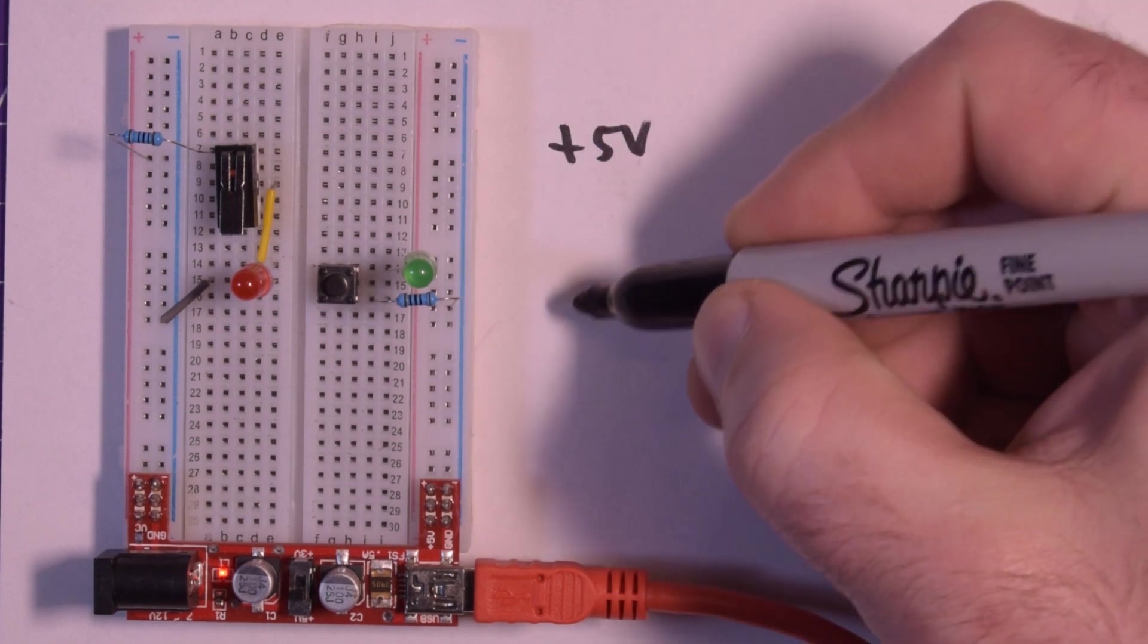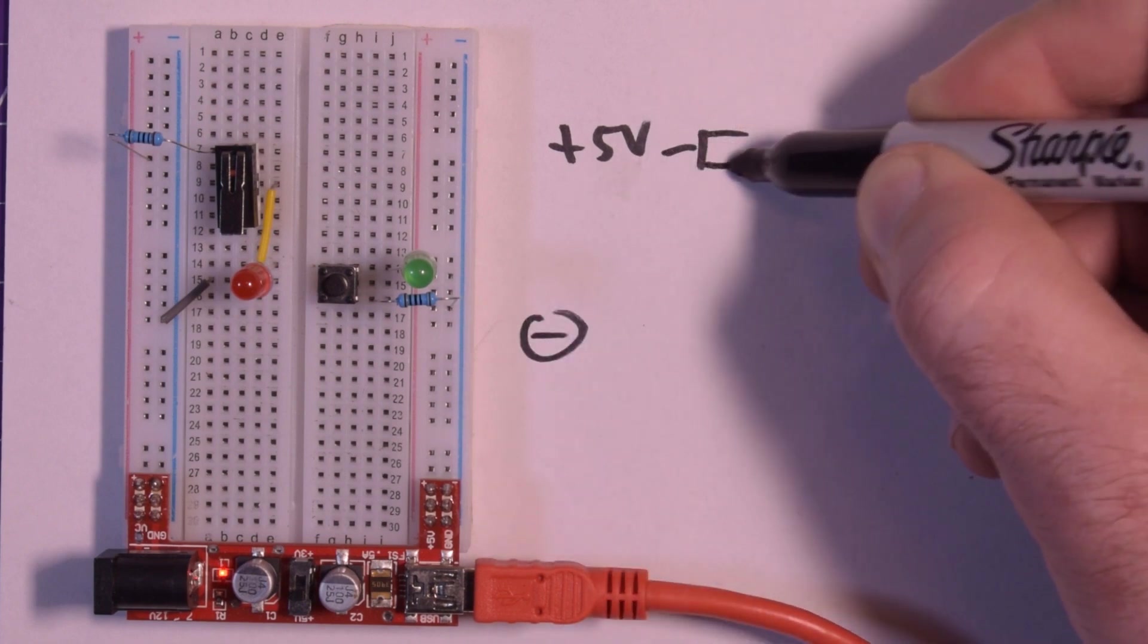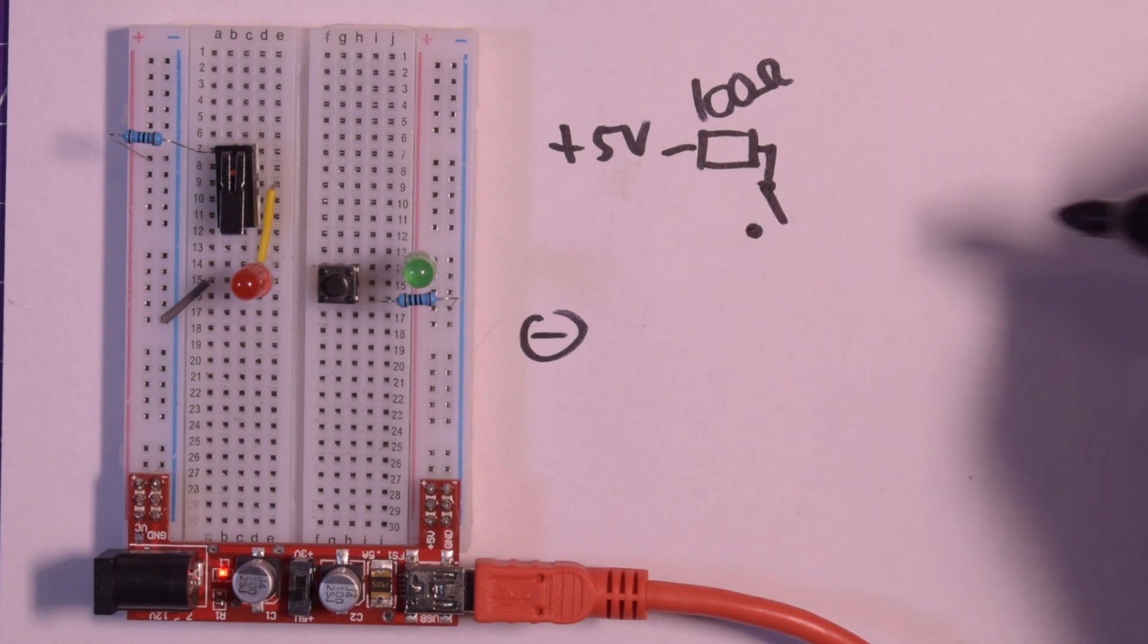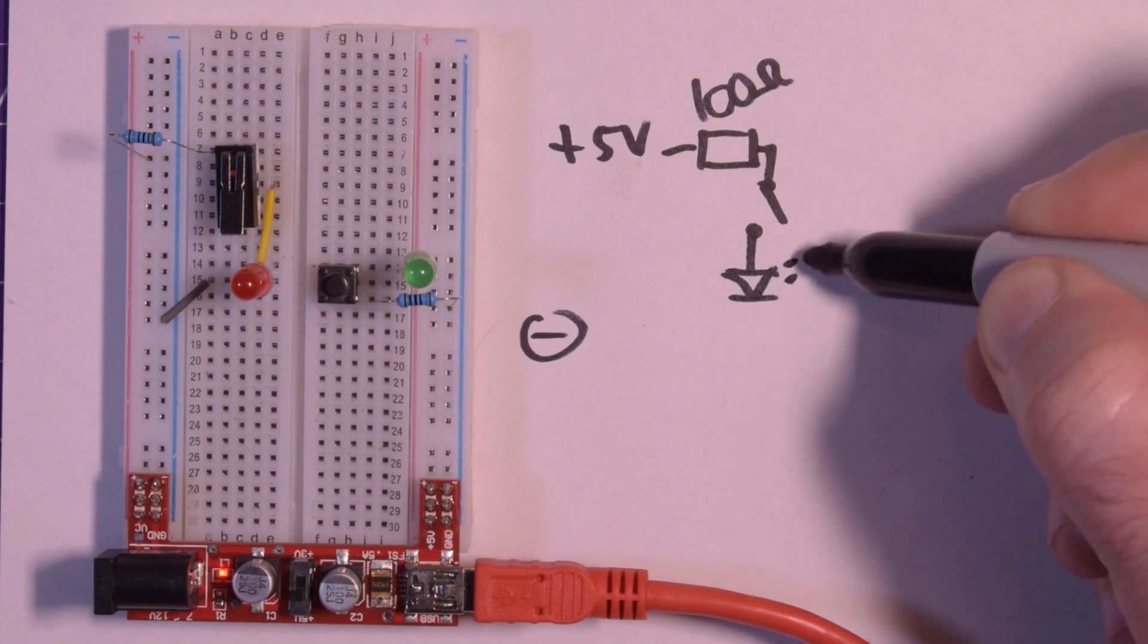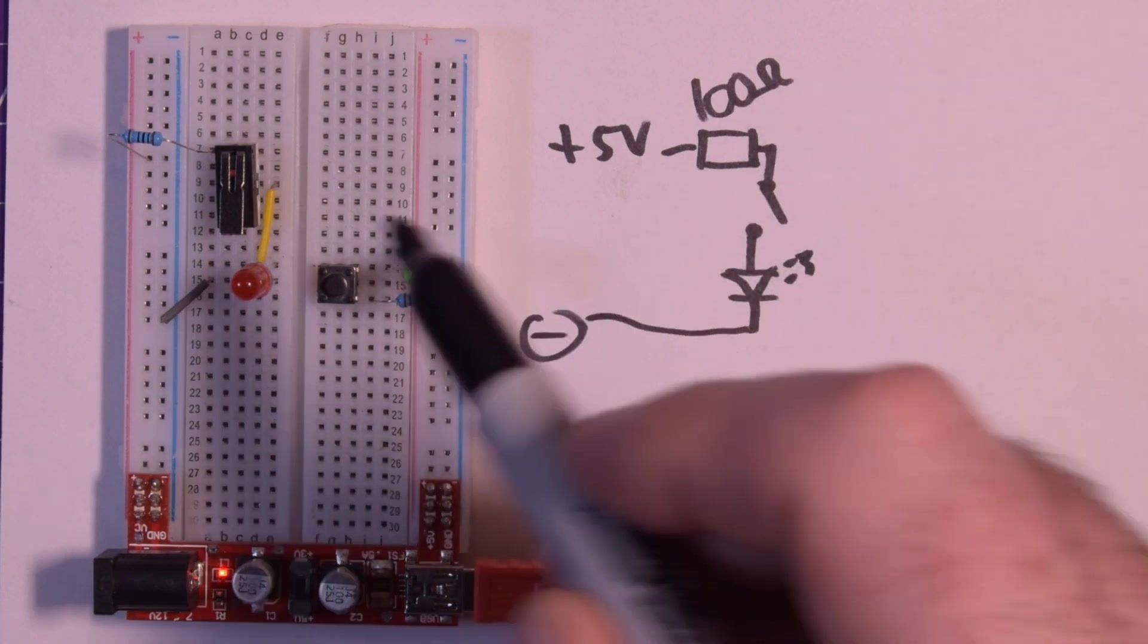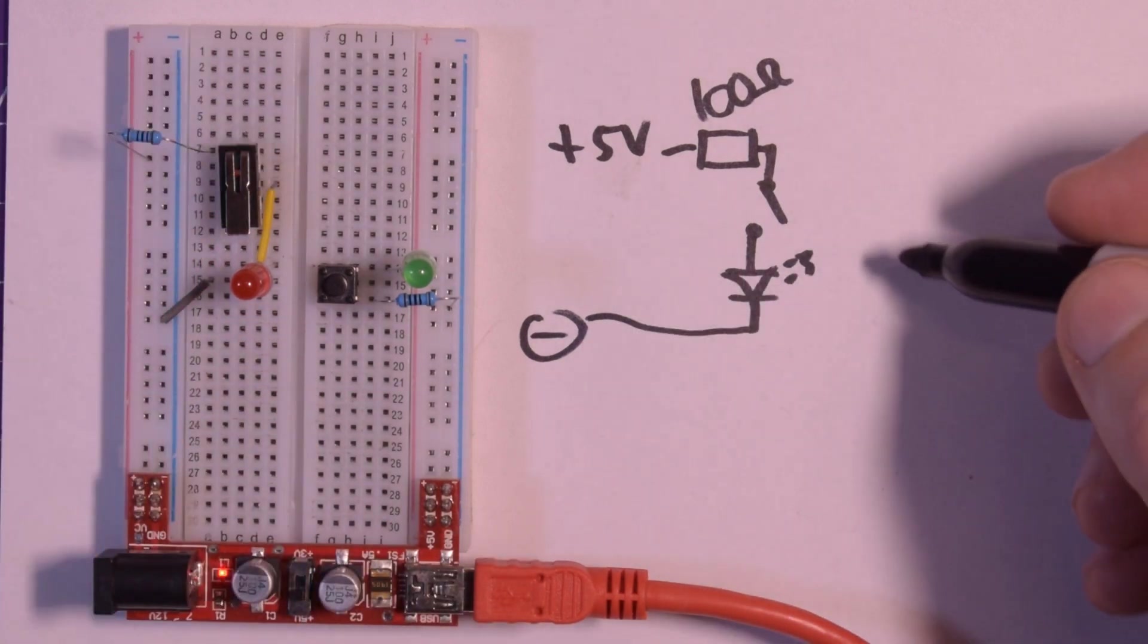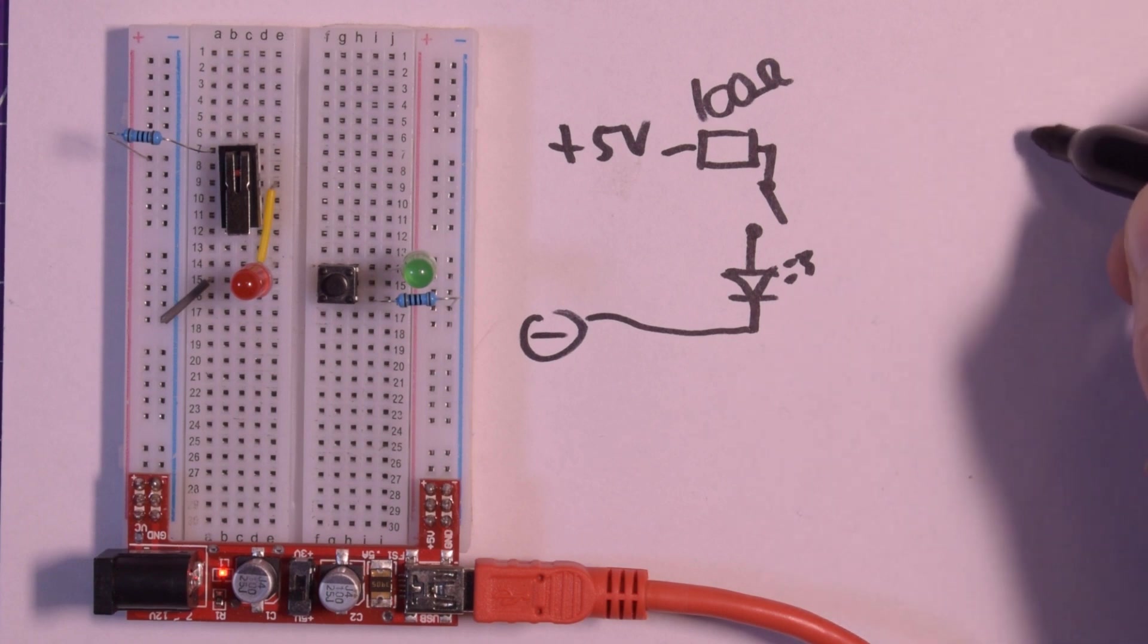So what I have over on this side is I have 5 volts and I have a ground, and the 5 volts goes through a resistor, in this case it's 100 ohms but it doesn't really matter for this example. I have a switch like that, I have a red LED, and I have a ground.